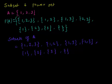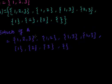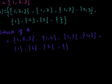The power set is a set which contains all the subsets, while subsets are just a part of the given set — each one individually forming a subset of the given set A.